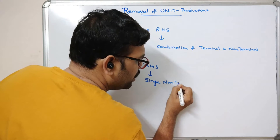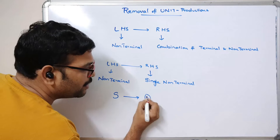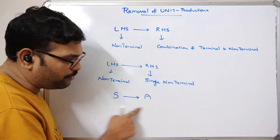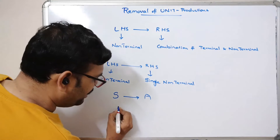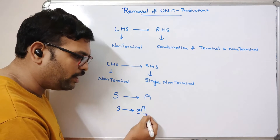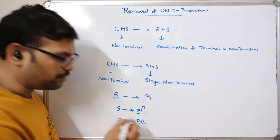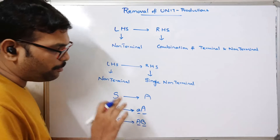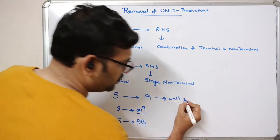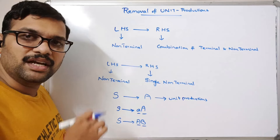...specifically a single non-terminal on the right-hand side, then we call it a unit production. For example, S→A: the LHS is a single non-terminal and the RHS is also a single non-terminal, so this is a unit production. S→AA is not a unit production because the RHS has a combination. S→AB is also not a unit production because there are two non-terminals on the RHS.